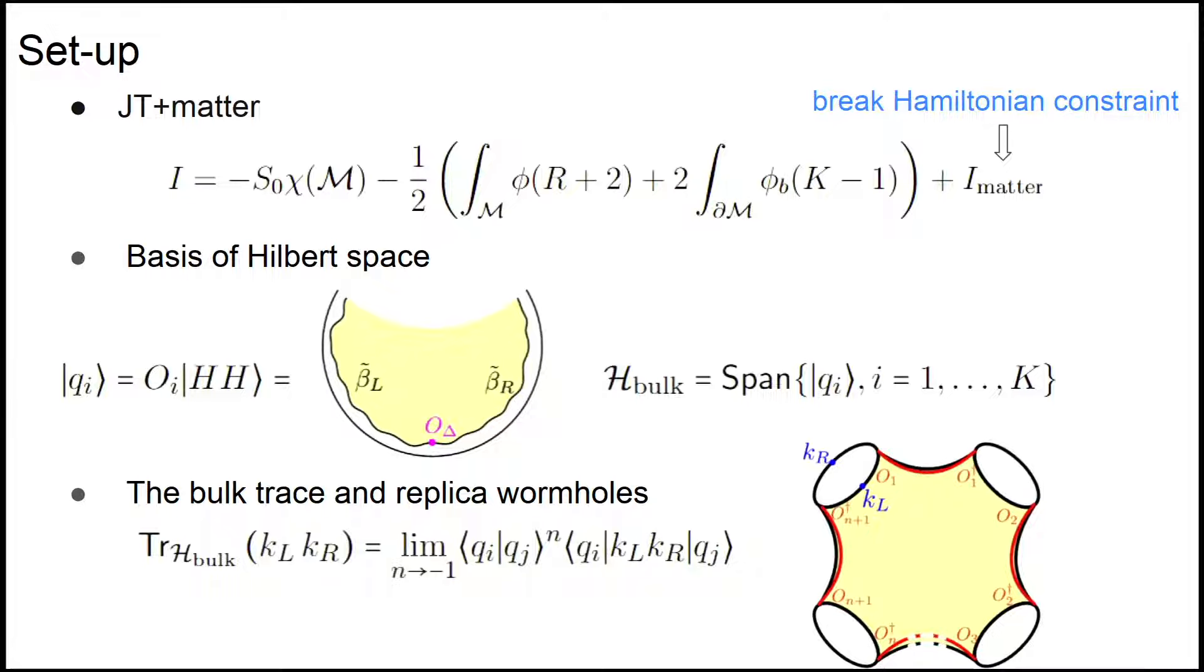To probe the property of the Hilbert space, we construct a set of bases by inserting operators in the past and then considering Euclidean time evolution. If we have enough number of such states, we should be able to span the whole Hilbert space and discuss its properties.